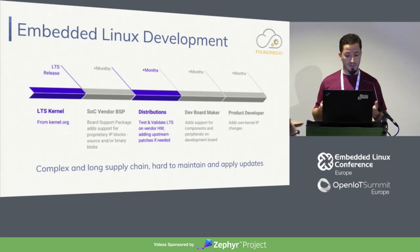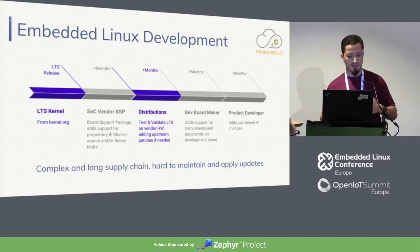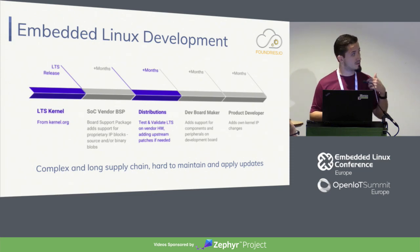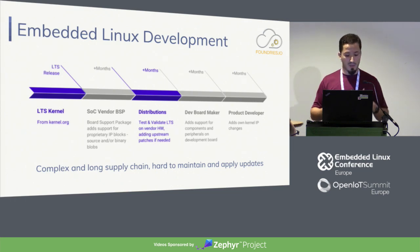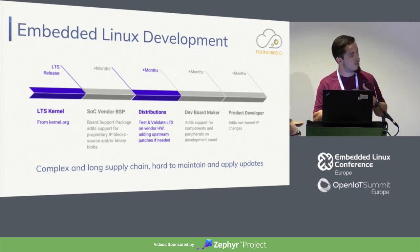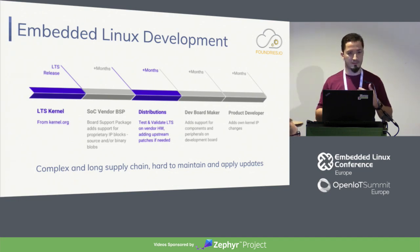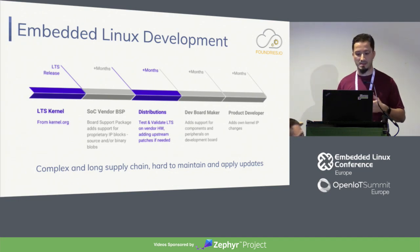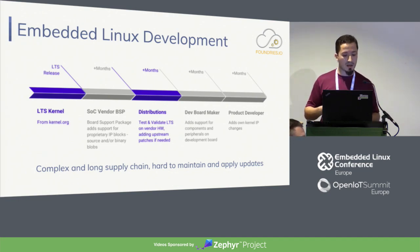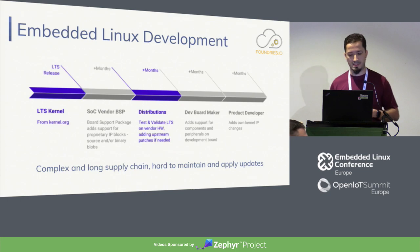If you have a problem — a vulnerability — and you want to apply a fix, it's really hard to trace back and see who is responsible. And it's hard to make sure that an upstream update doesn't bring a regression or issue on the SoC vendor trees and BSP. It becomes really hard to maintain over time.